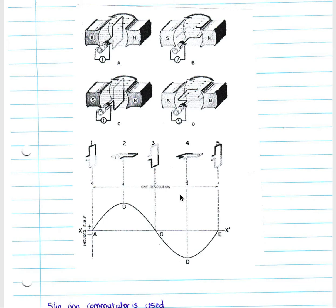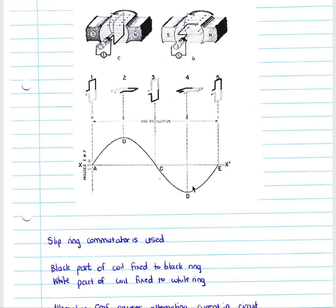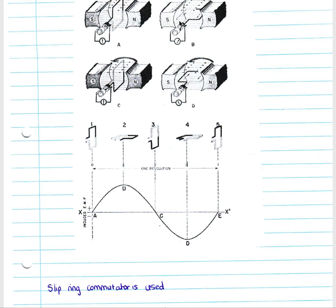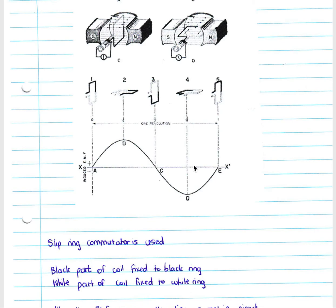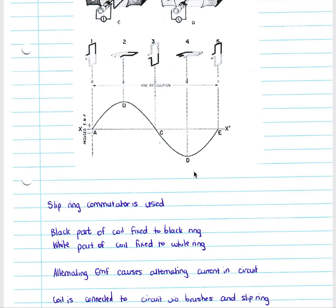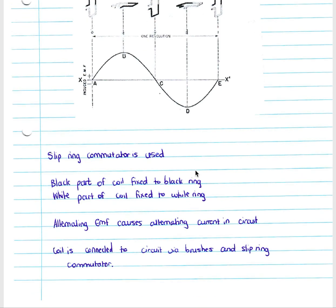In an alternating current generator, a slip ring commutator is used. The black part of the coil is always connected to the black part of the slip ring commutator, and the white part always to the white part. This means that as the current direction alternates in the coil, the slip ring commutator allows the current to flow out alternately through each part — illustrating the alternating direction of current through the circuit.